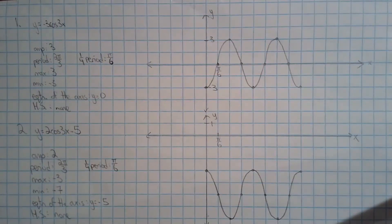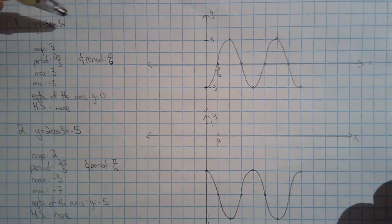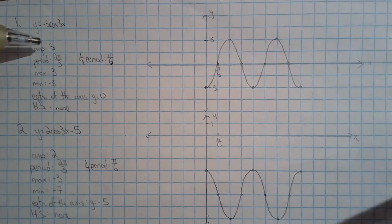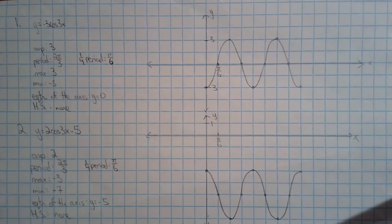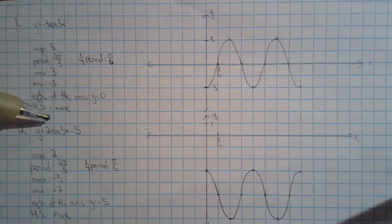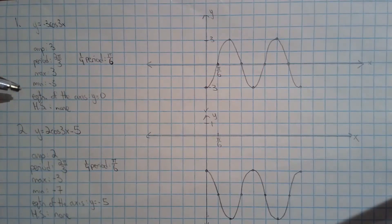In this video, I'm going to go over the homework for graphing transformed trig functions. The strategy for all six questions was essentially the same. The first thing I did was extract key information with respect to the graph — the special properties like the amplitude, the period, the maximum value, minimum value, equation of axis, if there's a horizontal shift, and the quarter period. All of this information, if you put it all together, will enable you to graph one cycle of the trig function.